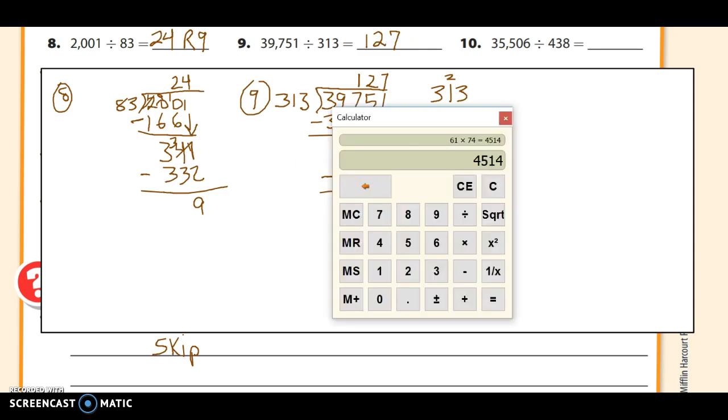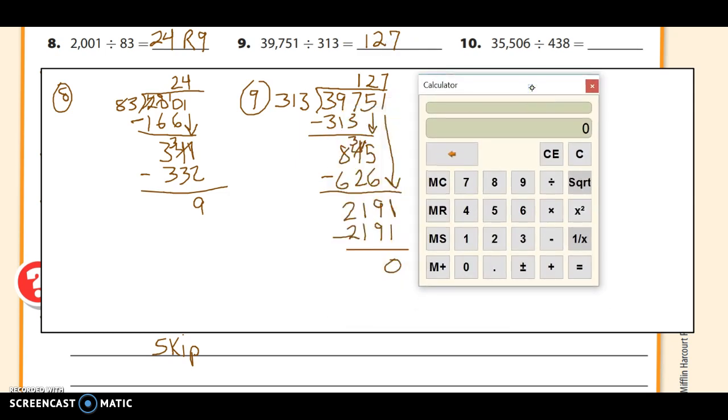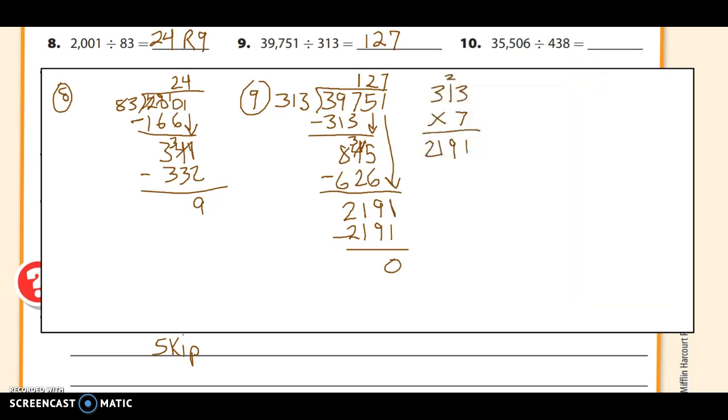Remember we can check simply by punching in my divisor, 313, times my quotient, 127, and I should get 39,751. I do. So I feel good about getting that right.